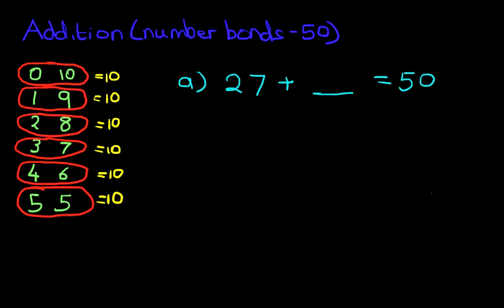So, we have to know which number added to 27. It is an add question. Which number added to 27 gives 50? So, how do we work this out?